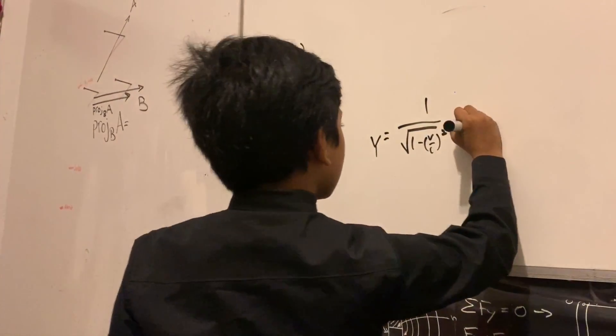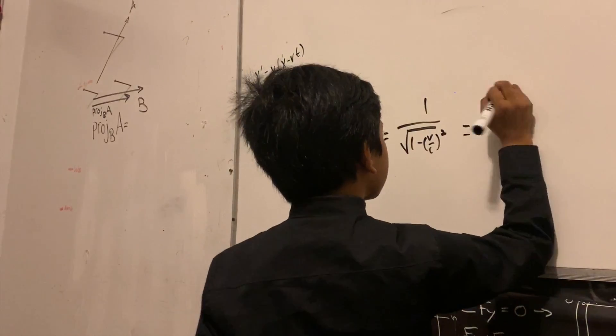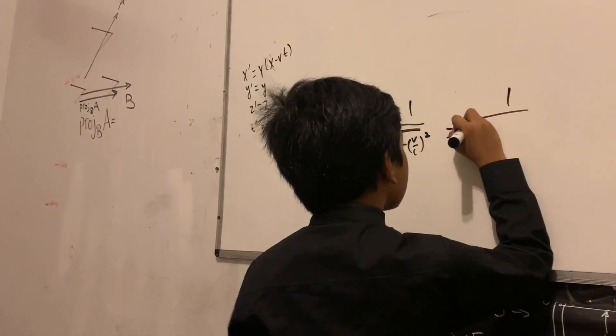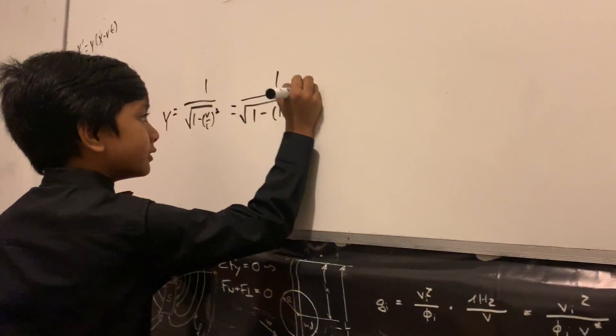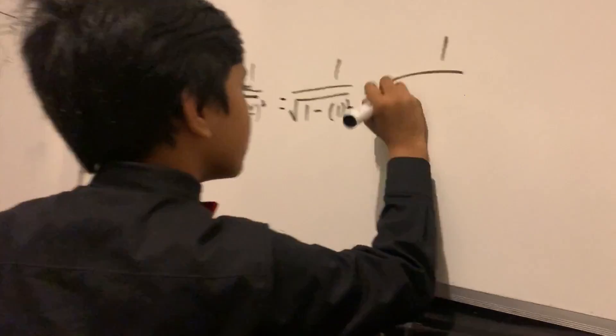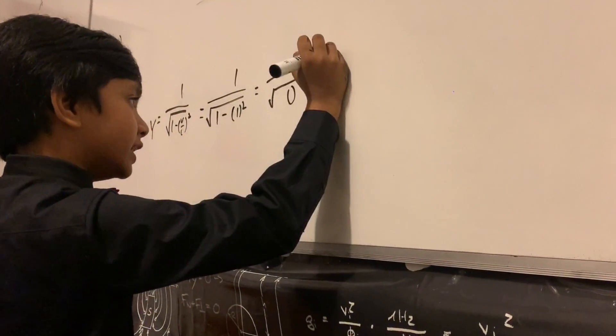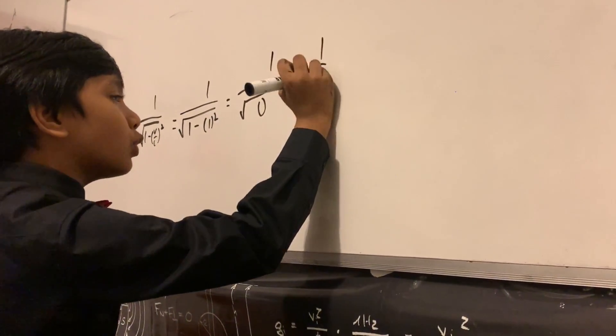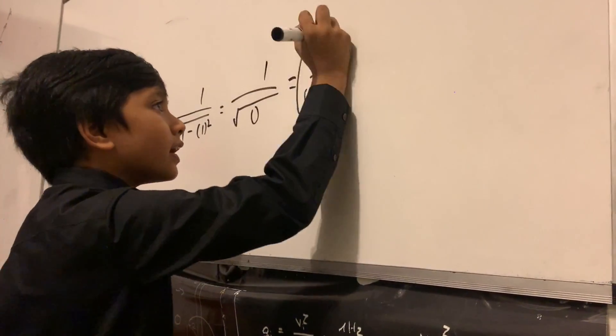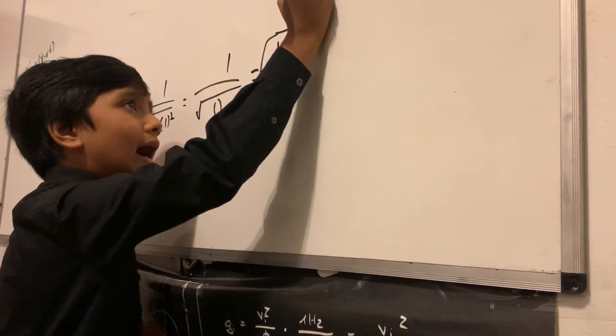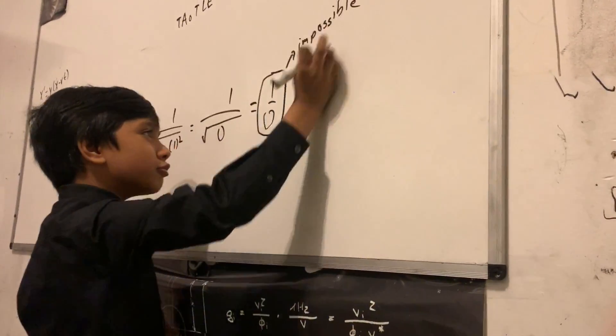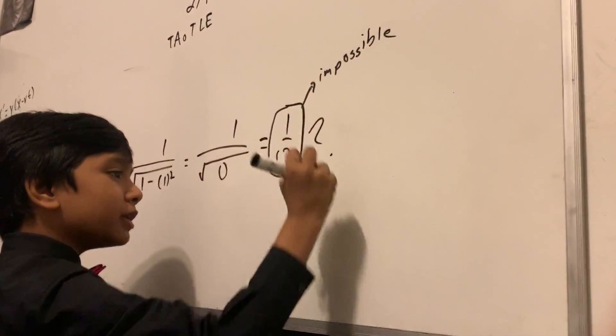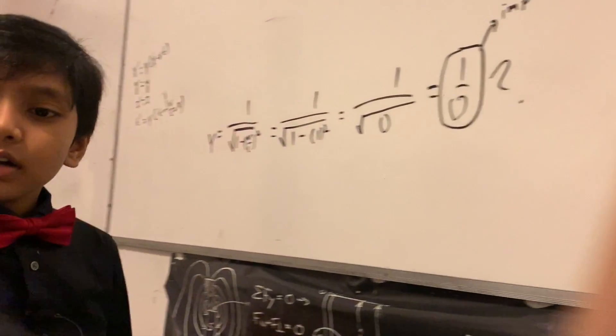Because the gamma is equal to one over square root of one minus v over c squared. So now the thing is, if you set v equal to c, that's going to give you one minus one squared. You see where this is going, right? That gives you a zero on the bottom, which gives you one over zero, which is impossible.